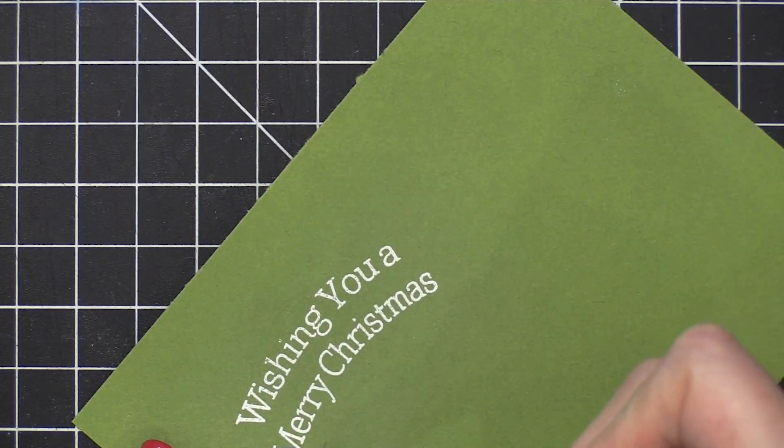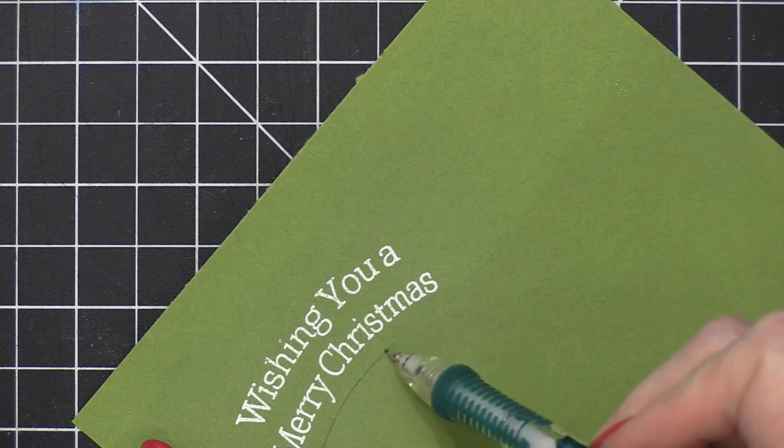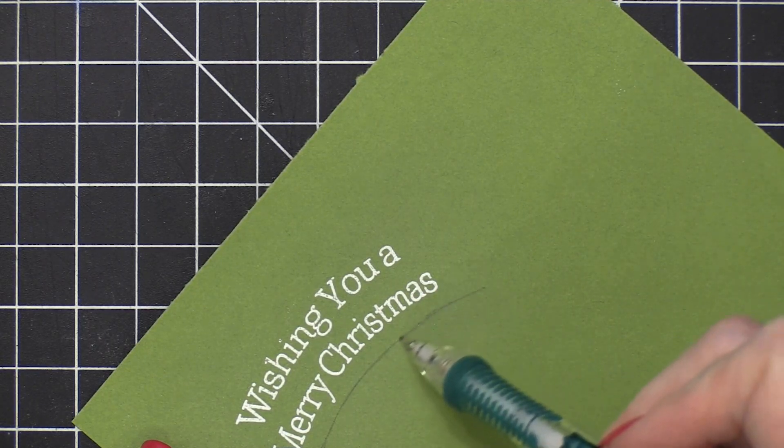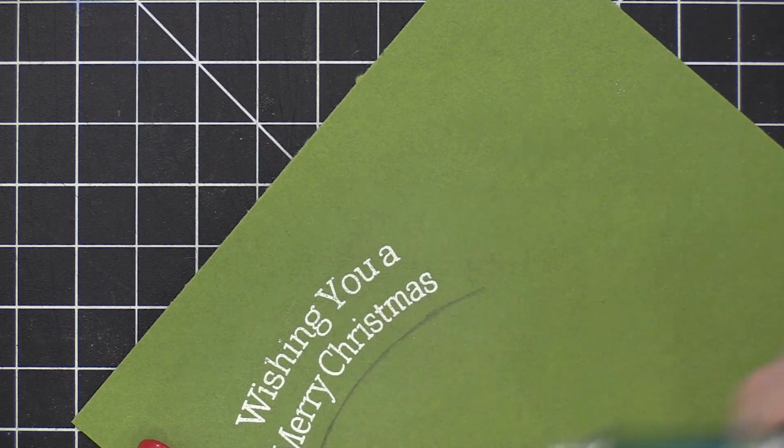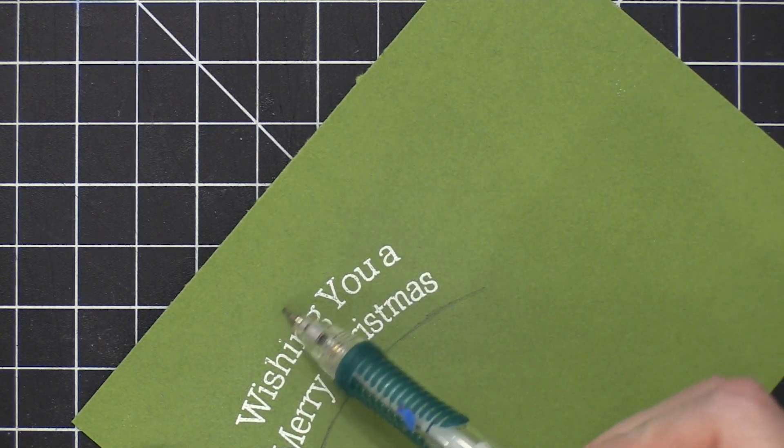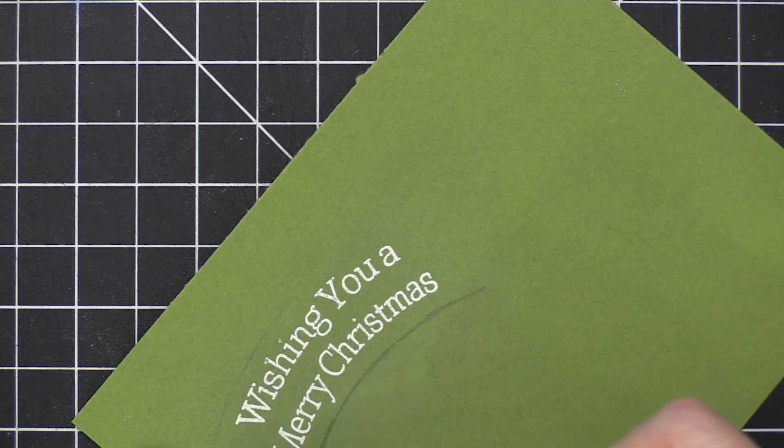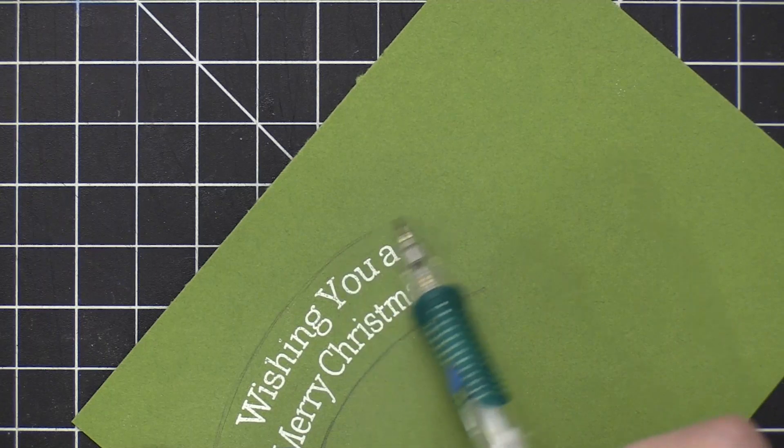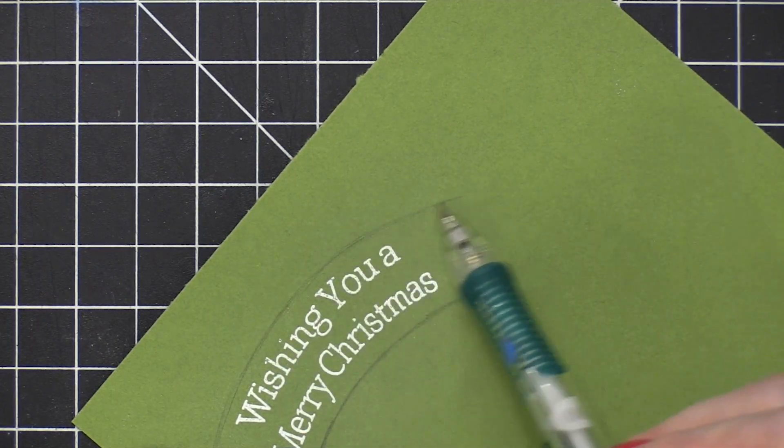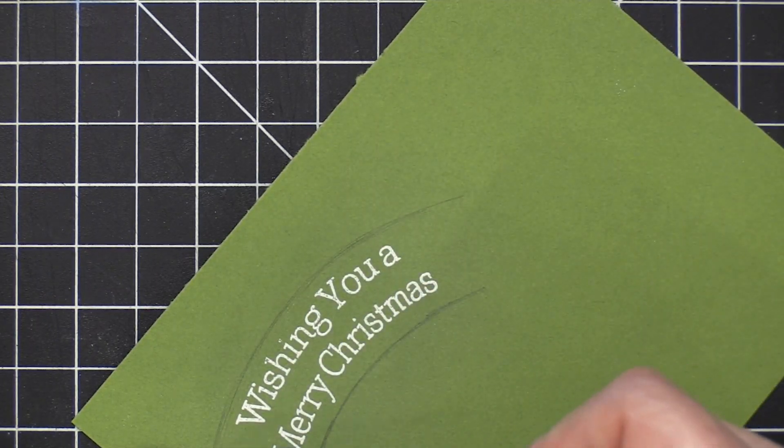Now you'll notice that the greeting is on a curve. I think that's so it can actually be placed above the scene that you're stamping. But since I'm doing something a little bit different today, I thought I would create a banner out of this greeting. So I used a pencil just to draw a curved line below the greeting and also above the greeting. And then I'm going to take my scissors and trim it out so that it's one long curved shape.